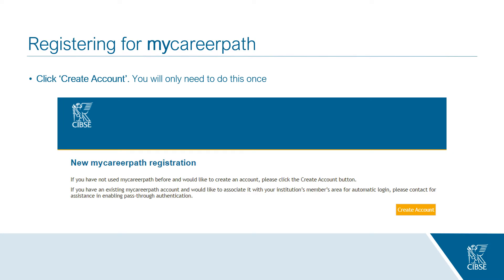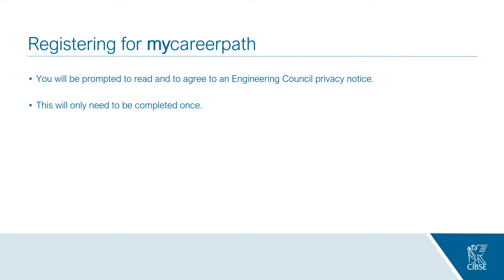On your first access you'll be prompted to create a new account — click Create Account. You will only need to do this once when you first log in. You'll then be prompted to read and agree to the Engineering Council's privacy notice, which will also only need to be completed once. If you're satisfied with the privacy notice, tick 'I have read and agree to the terms of this privacy notice' and then click Done.